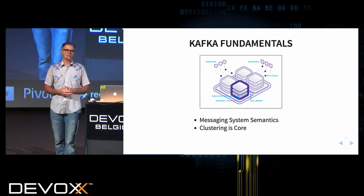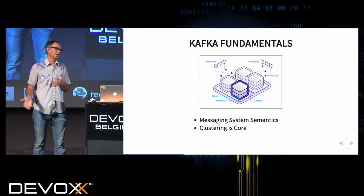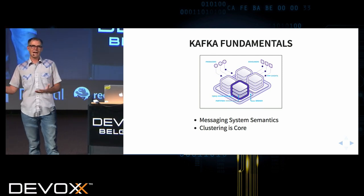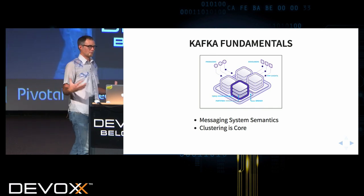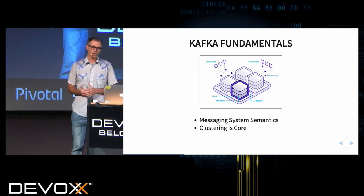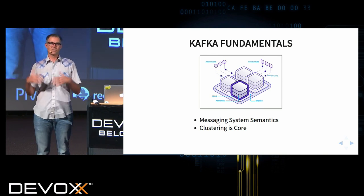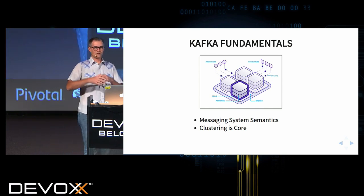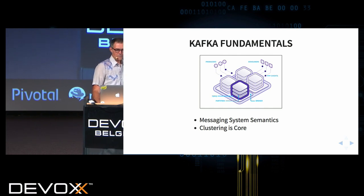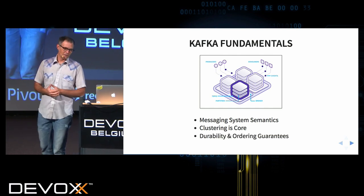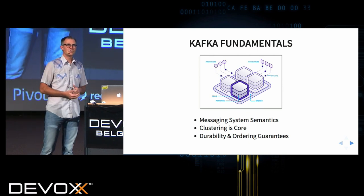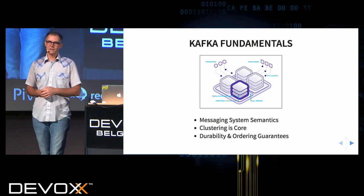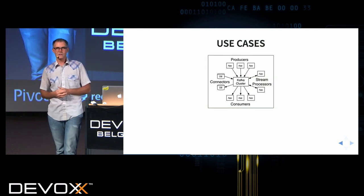Another key part of Kafka is that clustering is core. With first-generation event systems, clustering was usually an afterthought. With Kafka, clustering was part of the initial design and architecture, because in distributed systems we need that redundancy across machines and the performance of having many machines working together. Kafka also gives you guarantees around ordering and durability, which are really important in building modern systems.